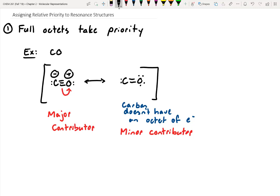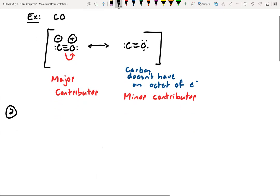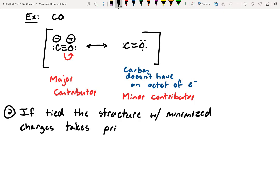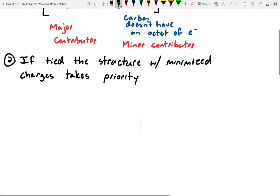Number two, meaning second priority after we've looked at octets. If tied, the structure with minimized charge takes priority. So let's assume we're comparing two structures where we have octets on every atom. The structure that doesn't have a charge is going to be more of a contributor than the one with the charge.